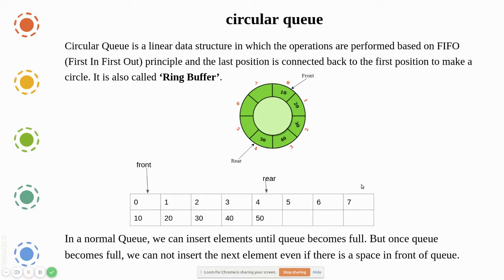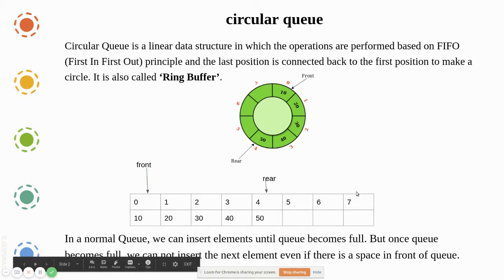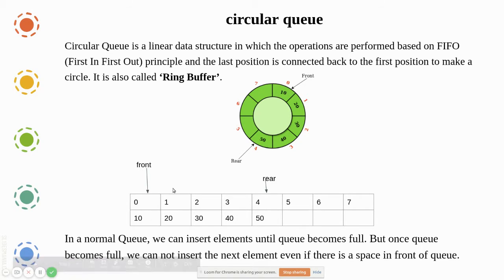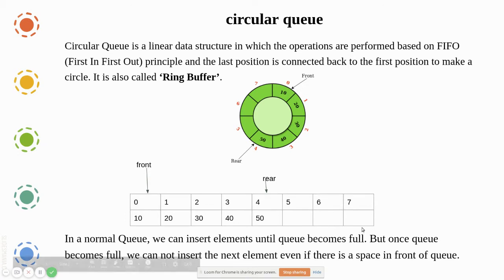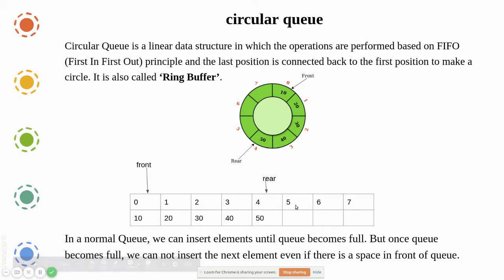When the rear reaches index 7, we say this is the end of the queue — you cannot add more because rear has reached the end. Likewise, when you remove an element, you keep incrementing the front pointer, which means you lose that value. A value can be removed from the front pointer and a value can be added to the rear.